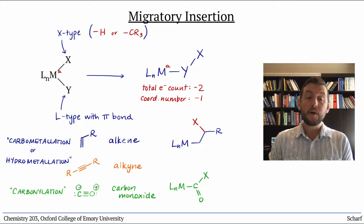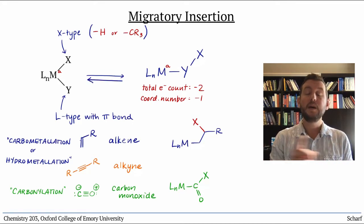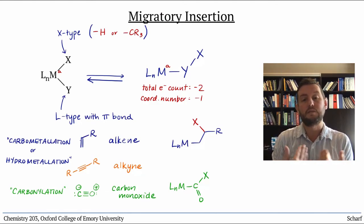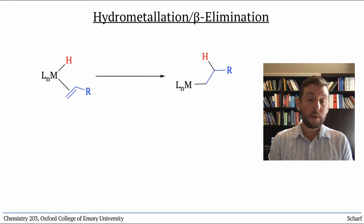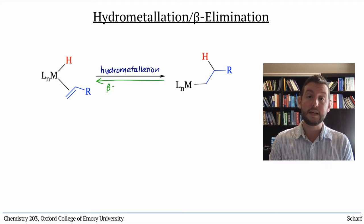In principle, all these migratory insertion reactions are reversible, but carbonylation and carbometallation rarely actually reverse. However, the reverse of hydrometallation is quite common, and it's called beta elimination.